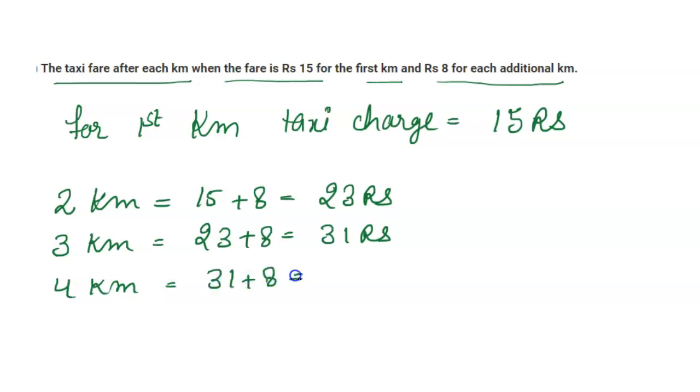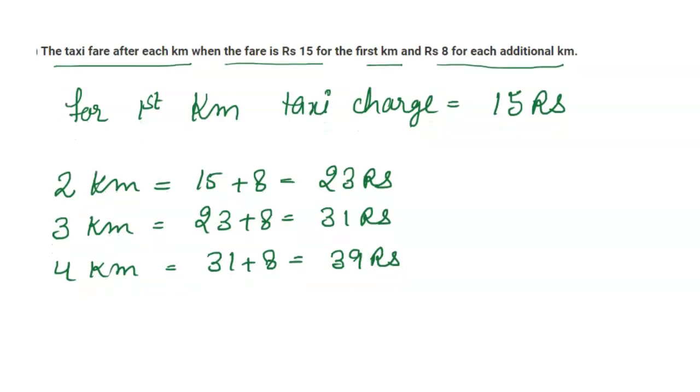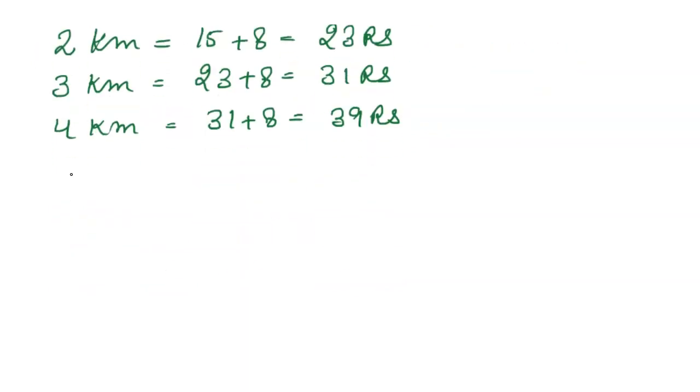For 4 kilometers it will be 31 plus 8 equals 39 rupees. Now when we check if this series is arithmetic progression or not: 15, 23, 31, 39, and so on. This is the first term, second term, third term, and fourth term. When it is arithmetic progression, then difference between all terms should be same.